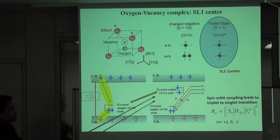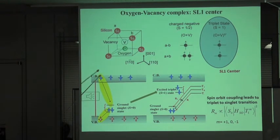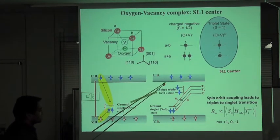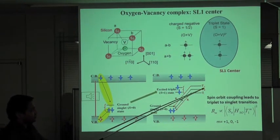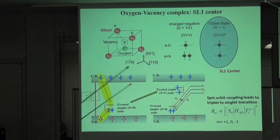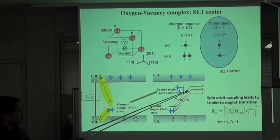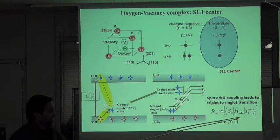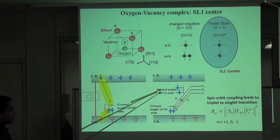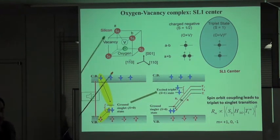The schematic shows the formation of SL1 centers. We start with a ground singlet state—the lone pair of electrons. Under illumination, we create a hole and an electron; the complex traps an electron and a hole from the conduction and valence bands, getting excited to the triplet level T+, T0, and T−. These are metastable states that recombine back to the ground singlet state via spin-orbit coupling. Under steady state, we maintain a triplet population in silicon.